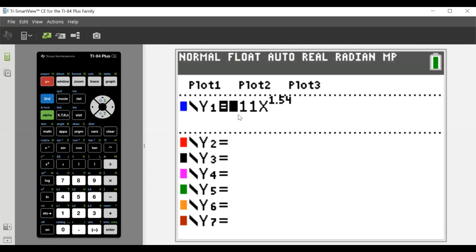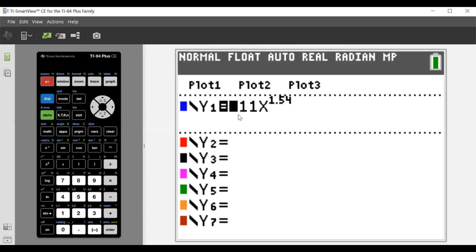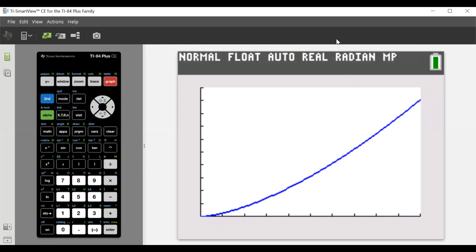All right. So we're in our calculator now. So we type in our 0.11X to the 1.54. We hit the graph. And what's it look like? Well, it looks like it's concave up and increasing. All right. So let's write that. A is concave up and increasing.